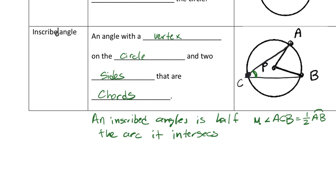So let's rewrite this with the measure in front, so it's one half of the measure, the measure of arc AB.